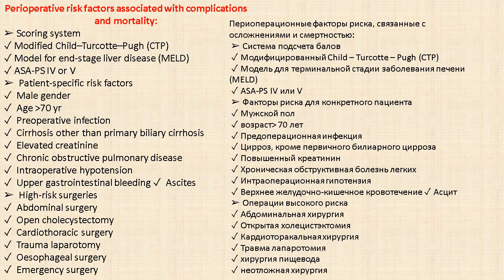Perioperative risk factors associated with complications and mortality include scoring systems and patient-specific factors: male sex, age more than 70 years, preoperative infection, cirrhosis other than primary biliary cirrhosis, elevated creatinine, chronic obstructive pulmonary disease, intraoperative hypotension, upper gastrointestinal bleeding, and ascites. High-risk surgeries include: abdominal surgery, open cholecystectomy, cardiothoracic surgery, trauma laparotomy, and esophageal surgery.